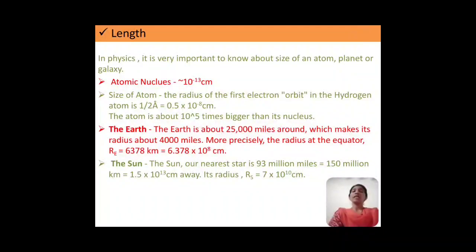If we compare this with an atom, then atom is about 10 raised to 5 times bigger than its nucleus. If we talk about the radius of the Earth, it is nearly 6378 kilometers, or we can say 6.378 into 10 raised to something. The radius of the sun is 7 into 10 raised to 10 centimeter.